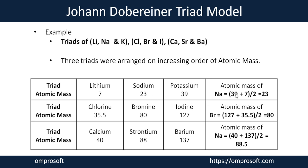For the lithium-sodium-potassium triad, sodium's atomic mass of 23 is confirmed by: (7 + 39) / 2 = 23. Similarly, for chlorine, bromine, and iodine: chlorine has atomic mass 35.5 and iodine 127; their sum divided by 2 gives the atomic mass of bromine. The same calculation applies to the third triad — calcium, strontium, and barium: the sum of calcium's and barium's atomic masses divided by 2 gives approximately 88.5, which is close to the atomic mass of strontium.